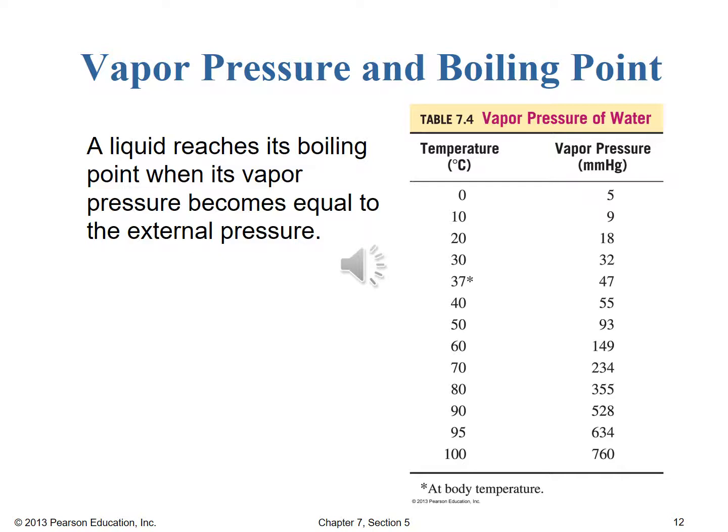We also see that at 37 degrees Celsius — body temperature — the vapor pressure of water is about 47 mmHg. The increases in vapor pressure may seem dramatic in Celsius, but really the relationship is based on absolute temperature in Kelvin.